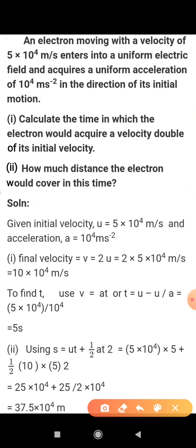We have u equals 5 × 10⁴ m/s and v is also given. V is a velocity double of its initial velocity, so velocity will be equal to 2u. Double of the initial velocity, v = 2u, means 2 × 5 × 10⁴. Answer you got is 10 × 10⁴ m/s.